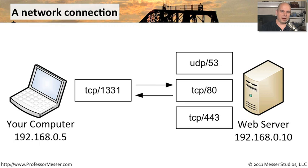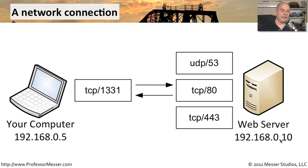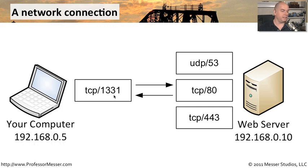For example, if we were going to talk to a web server from our workstation, your computer is 192.168.0.5 and the web server is 192.168.0.10. We know this web server is using TCP port 80. So we set up a session on our computer and say, 'Hey web server, we're 192.168.0.5. I've set aside TCP port number 1331, and I'm going to send traffic over to you — please send me a web page.'